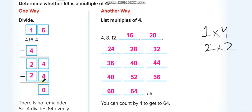There is another way to find out if 64 is a multiple of 4. You divide 64 by 4: 64 is the dividend and 4 is the divisor. 4 times 1 is 4, 6 minus 4 is 2, bring down the 4 to get 24, 4 times 6 is 24, 24 minus 24 is 0. No remainder — so yes, 64 is a multiple of 4. If you find a remainder, then the number is not a multiple of the divisor.